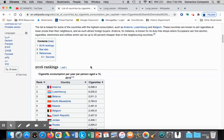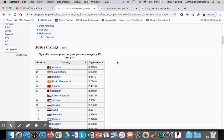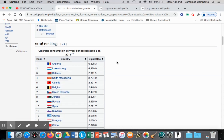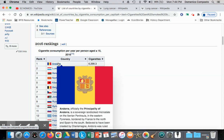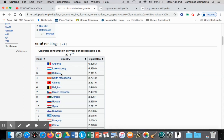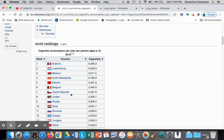What's interesting is we have a ranking, a 2016 ranking of cigarette consumption, I assume based on sales. And we can see that Andorra is number one, Luxembourg number two, and then we have Belarus, North Macedonia, Albania, Belgium, and so on.